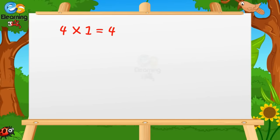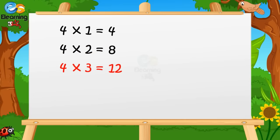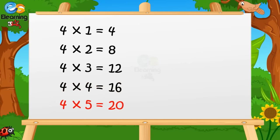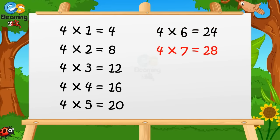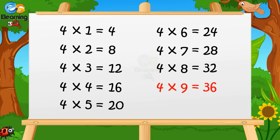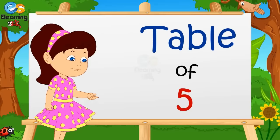4 ones are 4. 4 twos are 8. 4 threes are 12. 4 fours are 16. 4 fives are 20. 4 sixes are 24. 4 sevens are 28. 4 eights are 32. 4 nines are 36. 4 tens are 40.